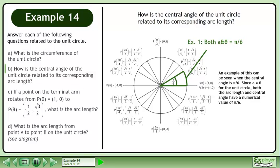An example of this can be seen when the central angle is π over 6. Since a equals θ for the unit circle, both the arc length and central angle have a numerical value of π over 6.